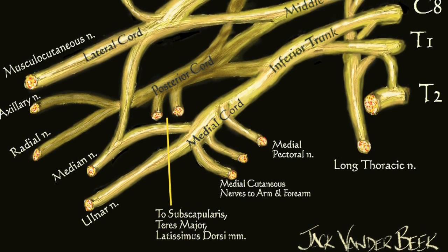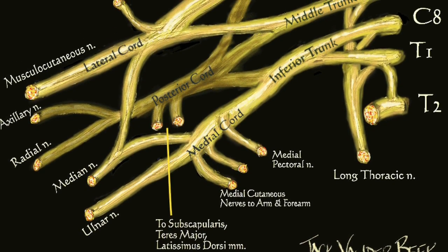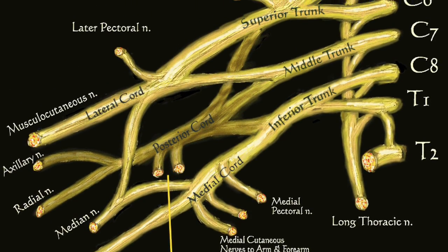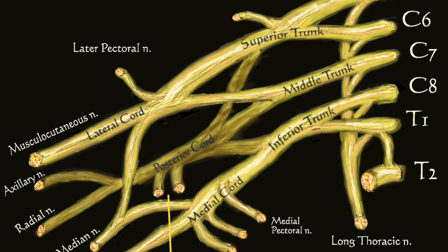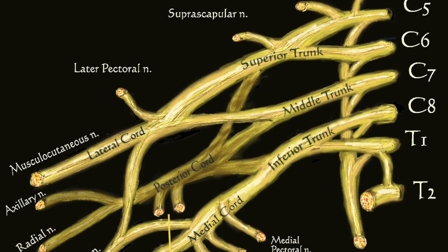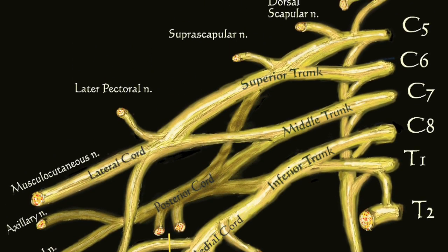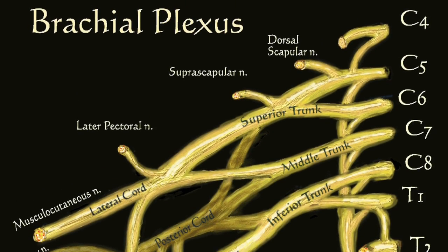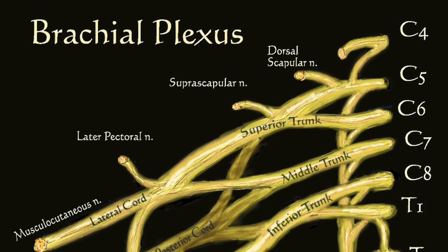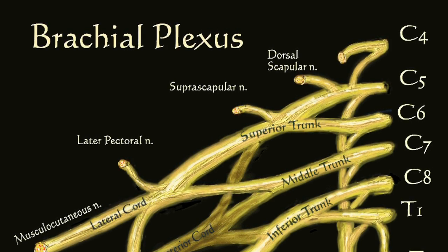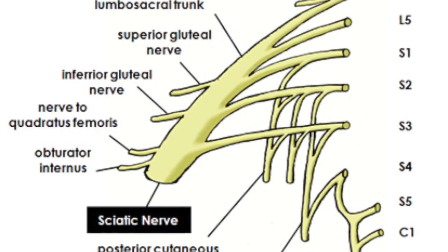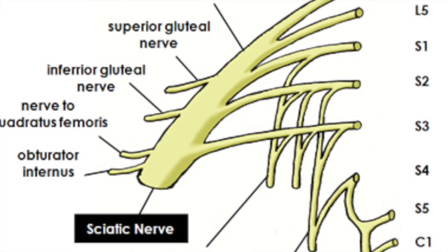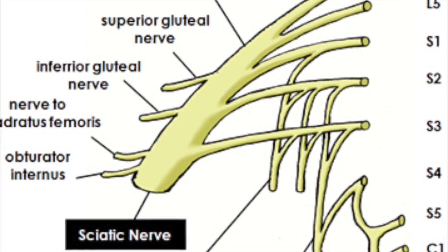For the peripheral nervous system, there are the brachial and lumbosacral plexa. A plexus is a branch of nerves that come together and then branch out. For the brachial plexus, it includes the last three cervical nerves and the first two thoracic nerves, and includes nerves such as the subscapular and the radial nerve. For the lumbosacral plexus, located in the lumbar region, it branches out to nerves such as the gluteal nerve and the sciatic nerve.